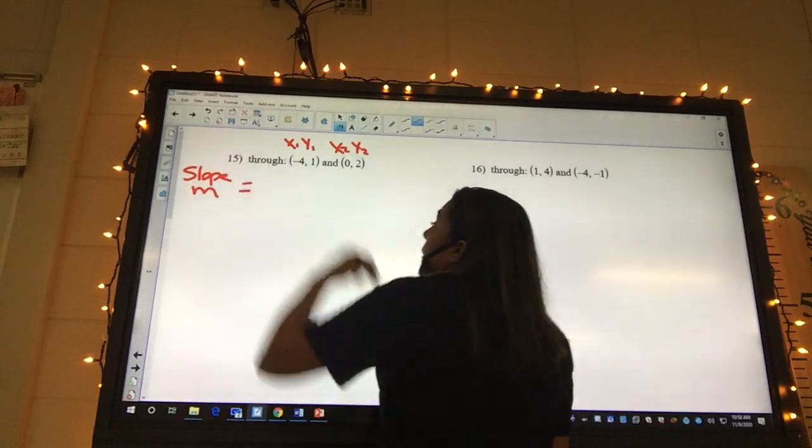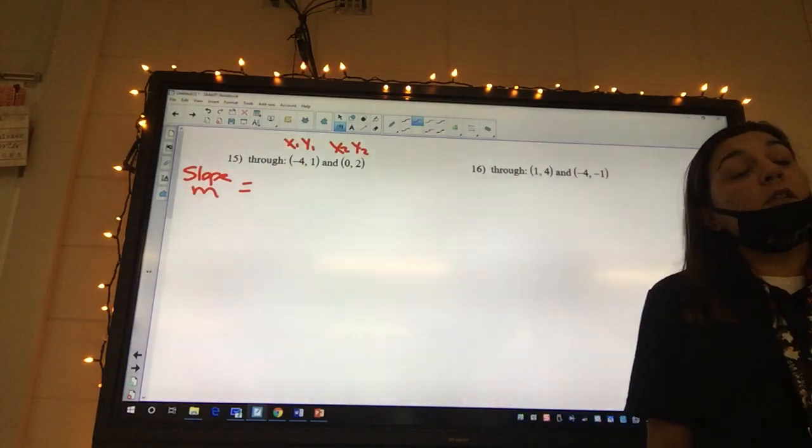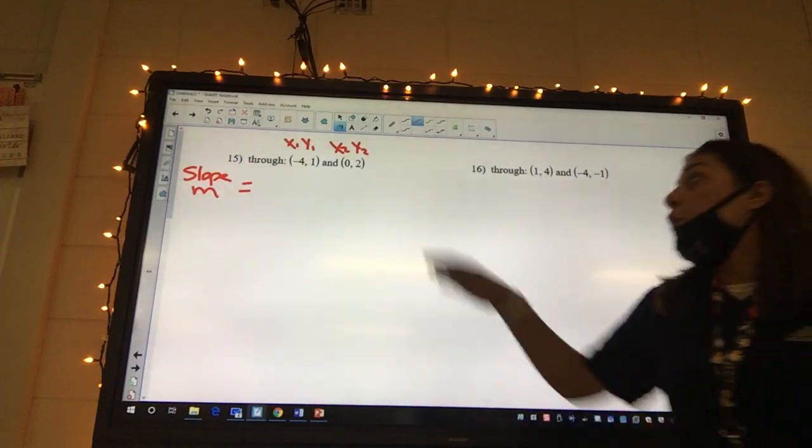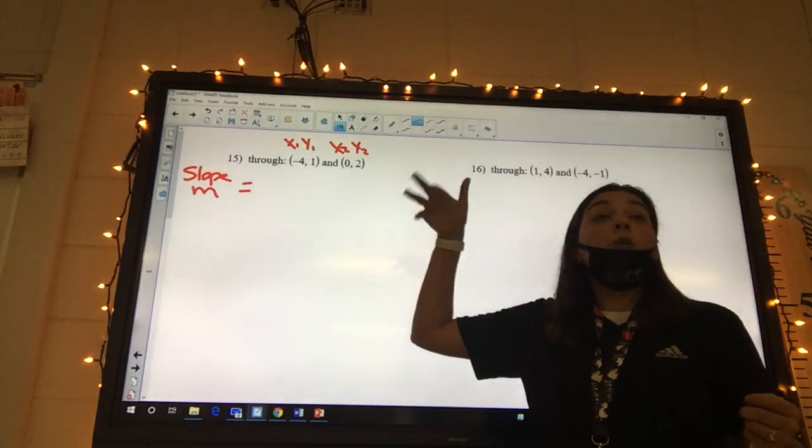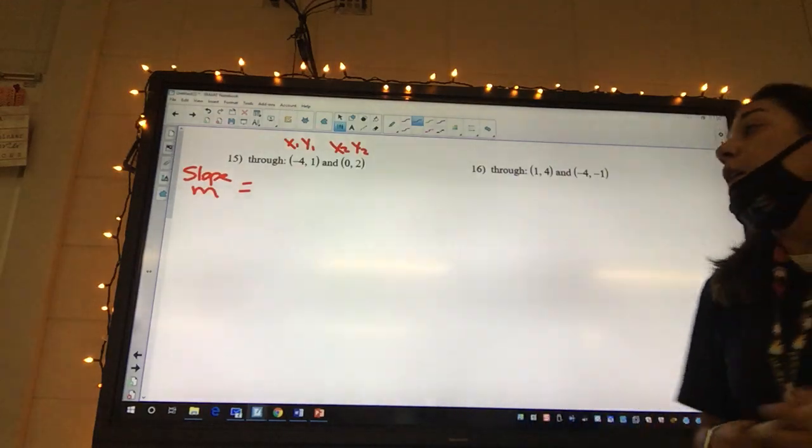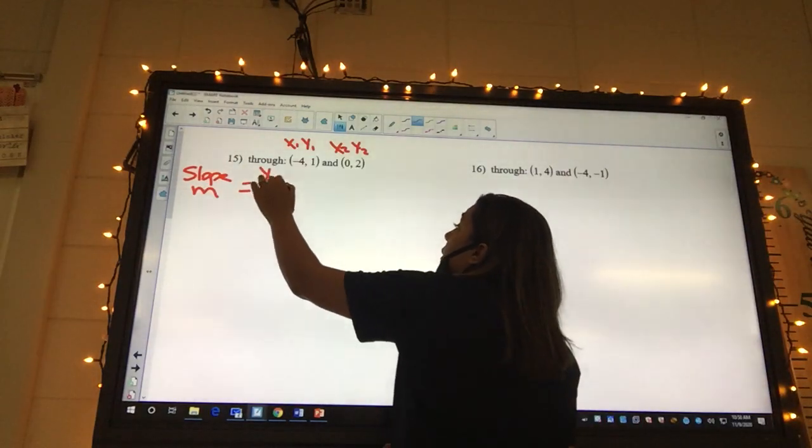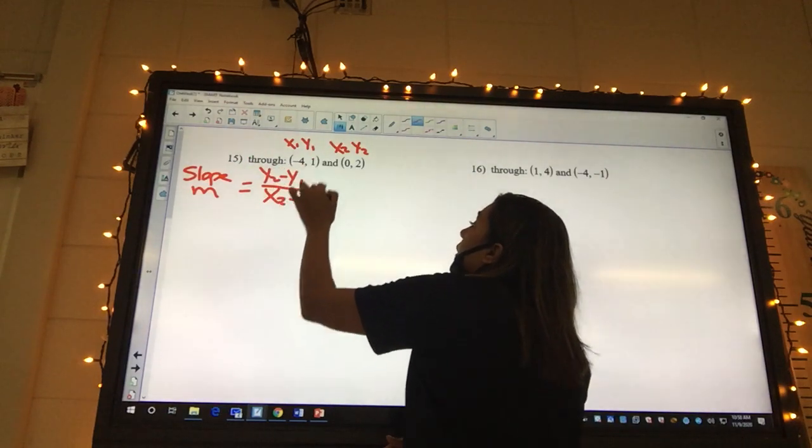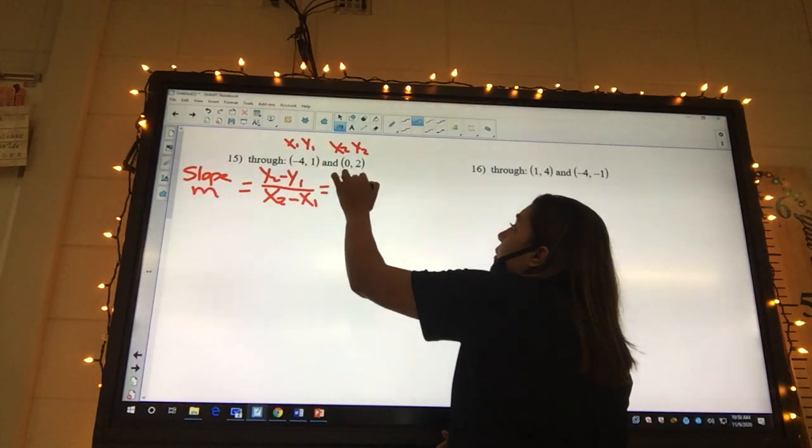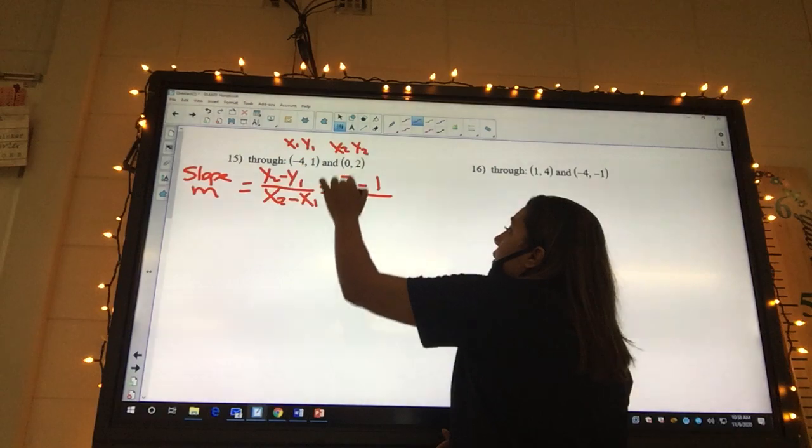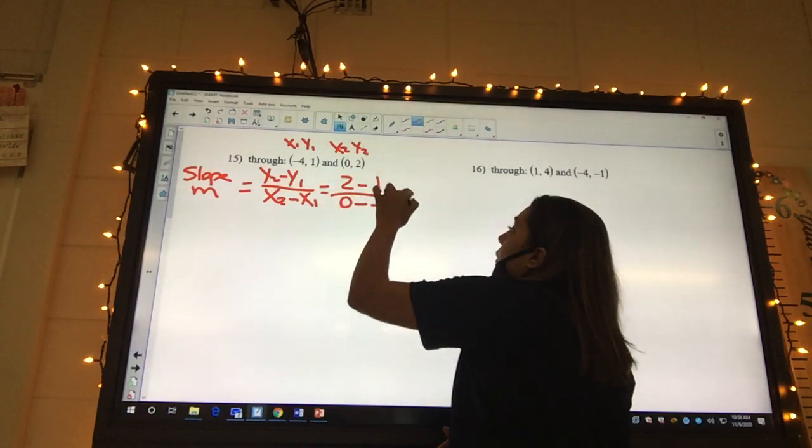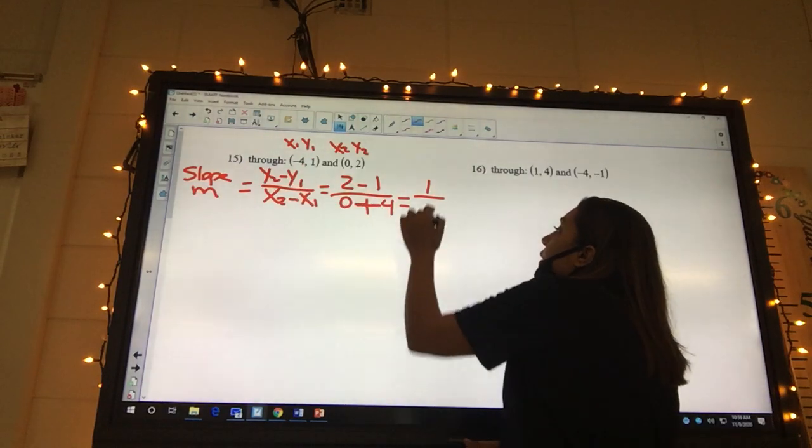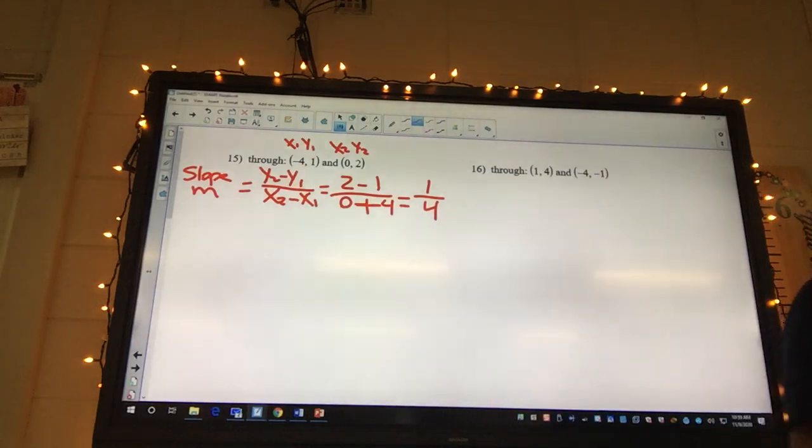Because if you think about slope intercept, it has a slope and an intercept. Do you have a slope and an intercept up there? Nope. You can't use that one. Point slope, do you have a point and a slope? You can't use it if you don't have it. So it's gonna be y2 is 2 minus y1 is 1, x2 is 0 minus x1 is negative 4. 2 minus 1 is 1.